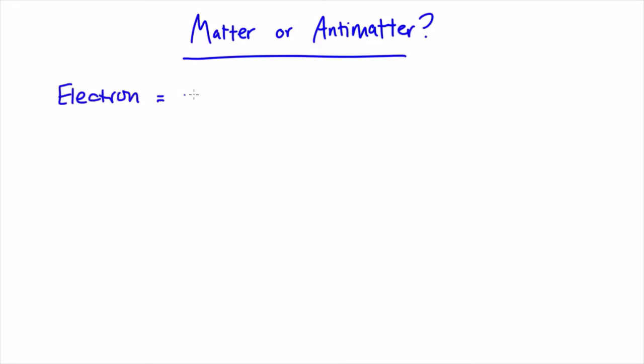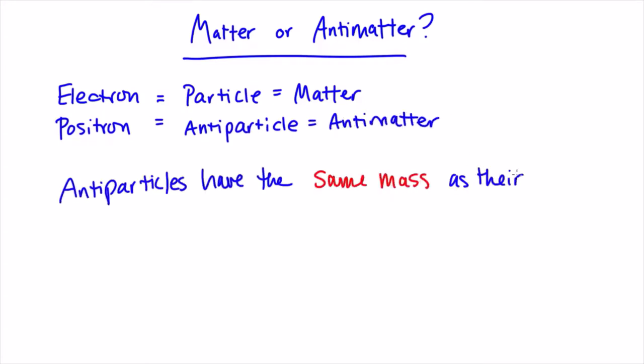So the example that I just gave you, the positron, is the antiparticle of the electron. Now antiparticles have the same mass as their corresponding particles, but have opposite charge.